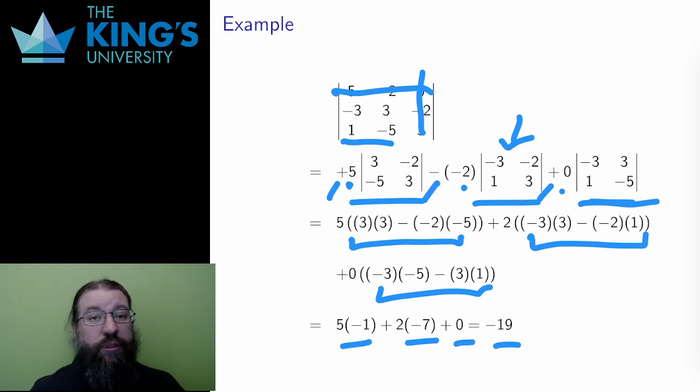There are 4x4 examples in the activities. For those, I apply the reduction twice. I choose a row or column of the 4x4 and do this cofactor expansion using the checkerboard signs. I get 4 different 3x3 matrices out of that.